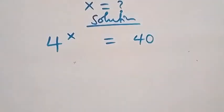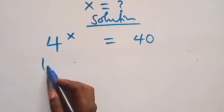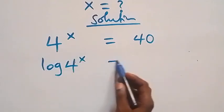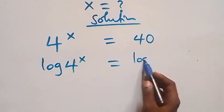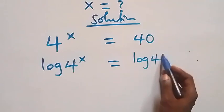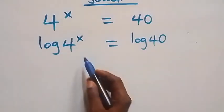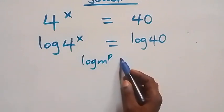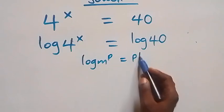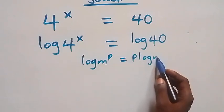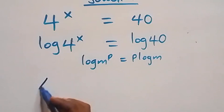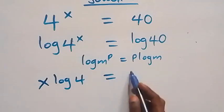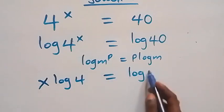Here we take the log on both sides: log of 4 raised to power x equals log 40. Then applying the power law of logarithm — when we have log m raised to power p, this becomes p times log m — so this becomes x log 4 equals log 40.